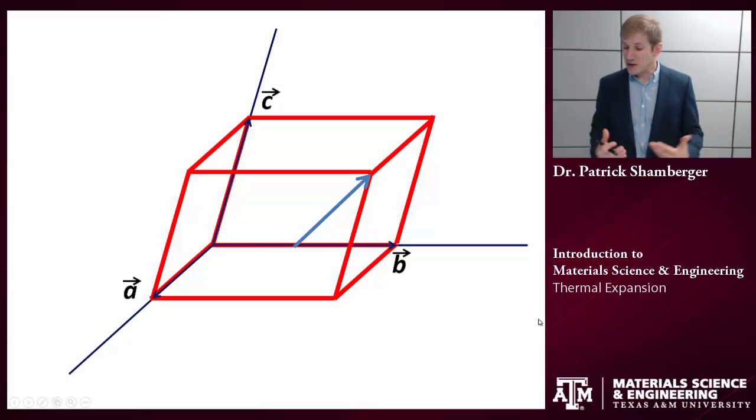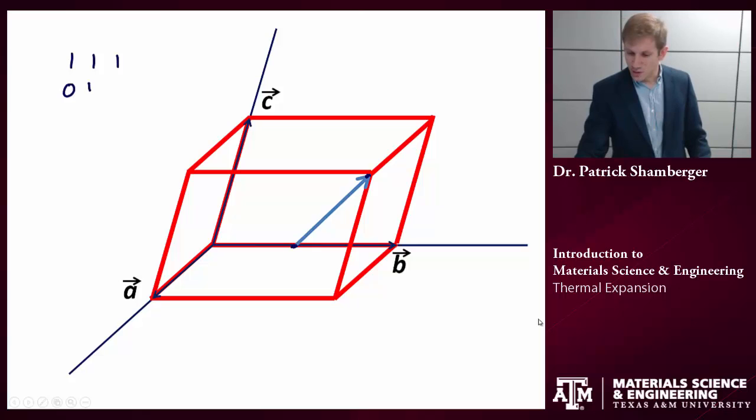The first is using the head-to-tail method. And so basically I'm describing this vector by subtracting the position of the tail from the position of the head. So again, remember we talked about how to index points in space. The point of the head here is given by 1, 1, 1. The point of the tail is given by 0, 1 half, 0. Now if you don't know how to do this, go back and review the video talking about indexing of points.